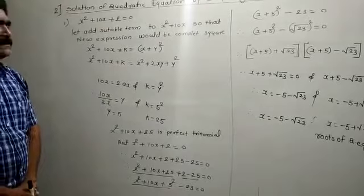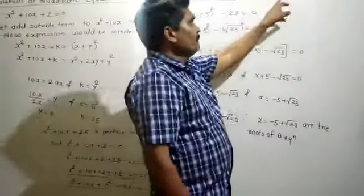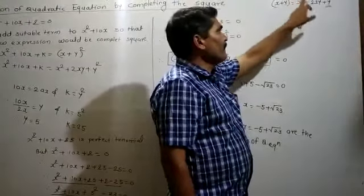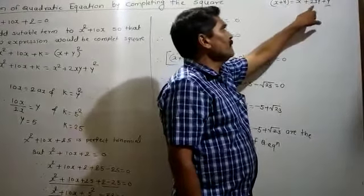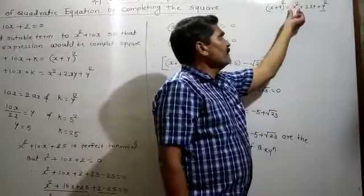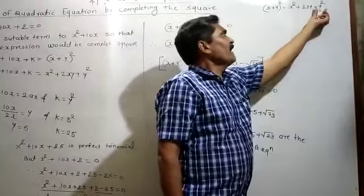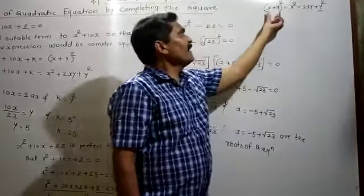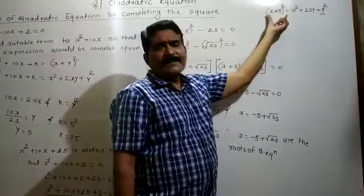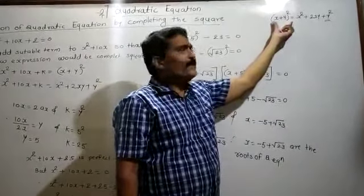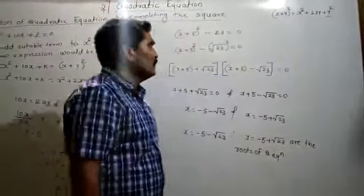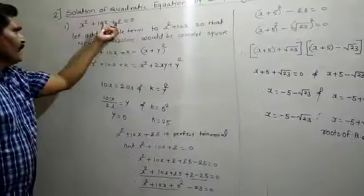Completing the square means: if we have (x + y) squared, its expansion is x squared plus 2xy plus y squared. If we have x squared plus 2xy plus y squared, we can write it as (x + y) squared. This is the concept — you complete the square and write it in (x + y) squared form. Here, the last term is not a perfect square term.